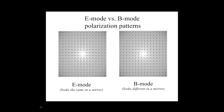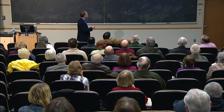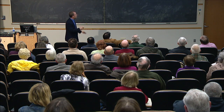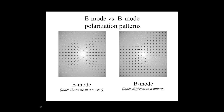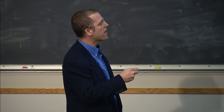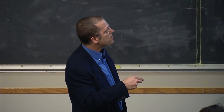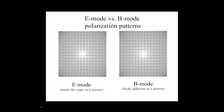Fortunately, there's a neat mathematical property of the patterns produced by density perturbations compared to those produced by gravity waves. We call them E-modes and B-modes. E-modes look the same in a mirror; B-modes look different — the handedness of the spiral flips. Density perturbations can only produce E-mode patterns. Gravity waves can produce both kinds. So if I map the microwave background polarization and see B-mode patterns, I've found evidence of gravity waves traveling through that plasma.